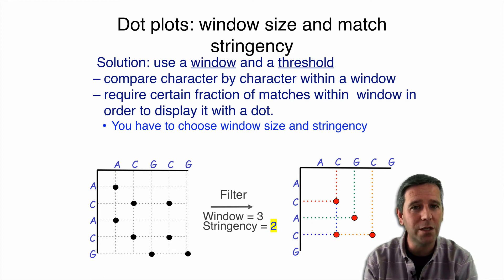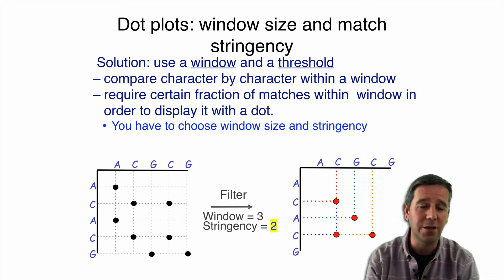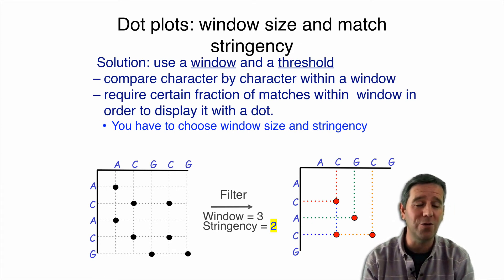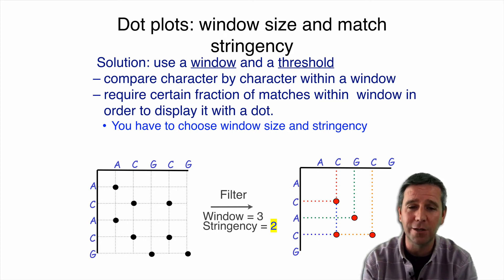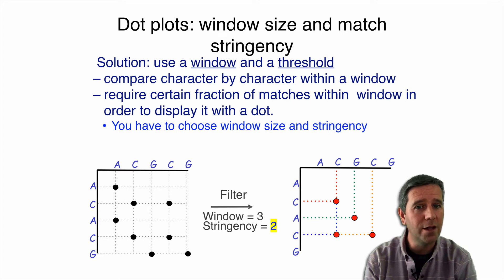So again, what we can see here is that there are less dots, of course, than when we use the match stringency of three, where we only have one dot in the final answer. But we still have much fewer than the original character by character approach that we started with. That was the first plot shown in all these slides here on the left. So we've drawn out the signal by being a little bit more strict about what we're looking for using this windowing approach.